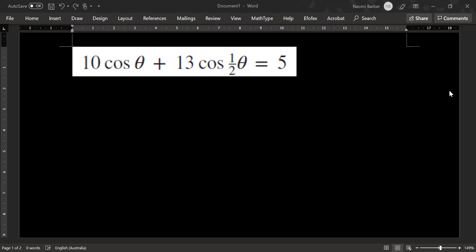Alright, 10 cos theta plus 13 cos half theta equals 5.